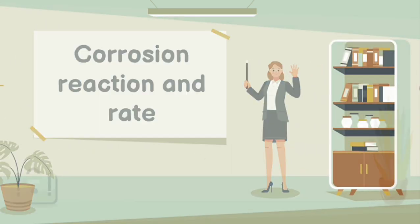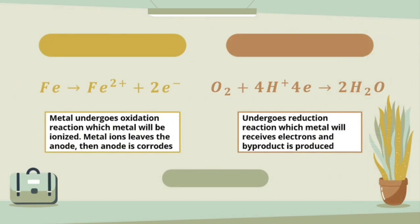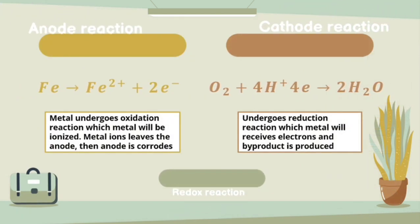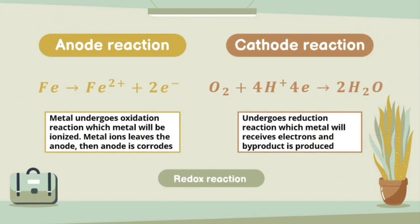Next, corrosion reaction and rate. In corrosion, there are two processes that occur which are anode and cathode reactions. Here we have a redox reaction in which metal will undergo oxidation and reduction reactions simultaneously.